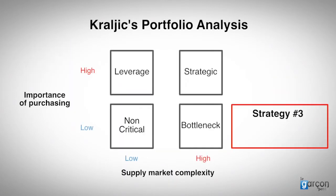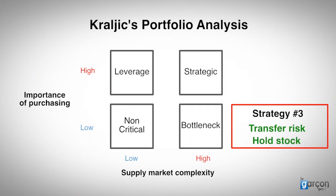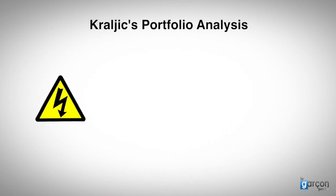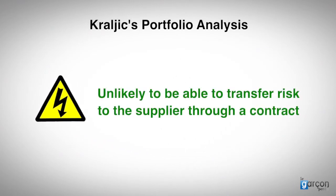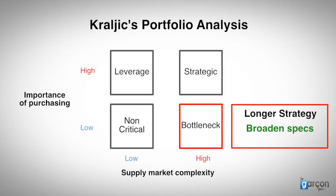In this case, strategy three is to accept dependence upon the supplier and seek to mitigate the risk through negotiating a contract, holding stock of spare parts, or perhaps developing a contingency plan. However, when we have weak bargaining power, we are unlikely to be able to transfer much risk to the supplier through a contract. So a longer term strategy might be to broaden the specifications of the product or to search for new suppliers.